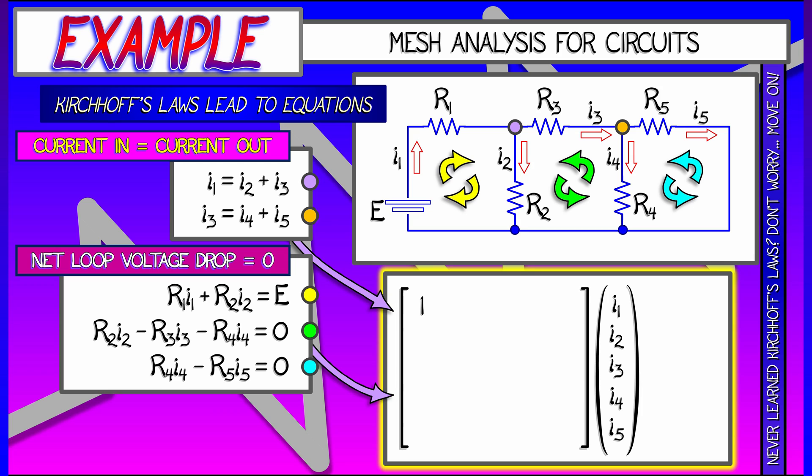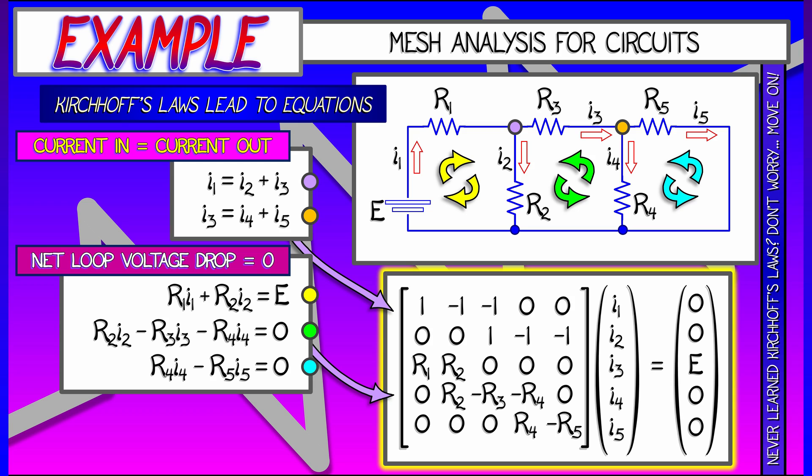In the end, you've got five equations, five unknowns, I1 up through I5. You pull out all of these constants in front of them that involve these resistances. And then on the right-hand side, you have a vector that is mostly zeros, but has that one E in it from that third equation.